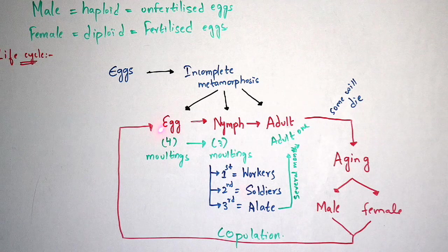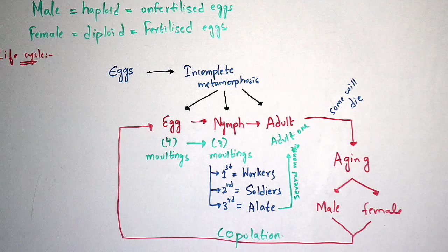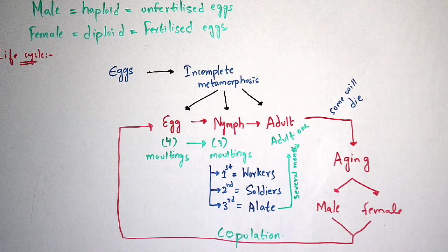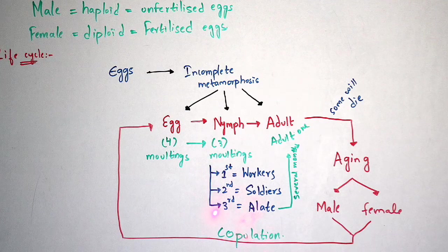Coming to the egg stage: each life cycle begins from the egg. This egg undergoes four moultings. Moulting means development. After completion of these four moultings the egg enters into the next stage, which is the nymph. The nymph undergoes three moultings. Within these three moultings, three types of termites are formed: after the first moulting, workers are formed; after the second moulting, soldiers are formed; and after the third moulting, alates are formed.